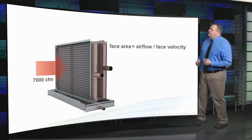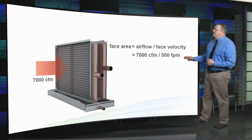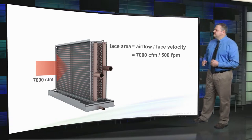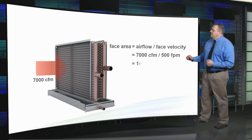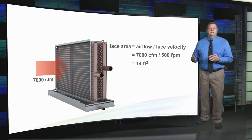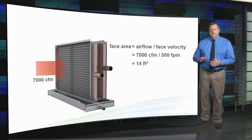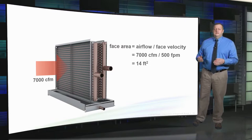The entering chilled water temperature is 42 degrees with a 15 degree delta T at design conditions. To select the size of this coil, let's start with a traditional sizing convention of 500 feet per minute face velocity. Dividing the airflow of 7000 CFM by 500 feet per minute results in a coil face area of 14 square feet. We'll select the size 14 air handler, since the unit size typically represents the nominal face area of the cooling coil.